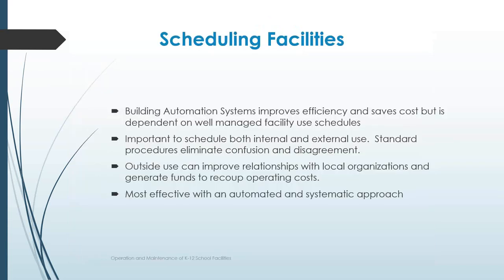Another area is scheduling — really important when managing a facility and sometimes overlooked. Especially when a facility is used by internal and external groups, it's important to have an effective method of scheduling. Most of our school buildings now use some sort of building automation system to improve efficiency and save costs, and it depends on a well-managed facility schedule to make sure that the building automation system is implemented as effectively as possible to adjust things like heat and air. Conflict can arise if two groups think they're both using the gym at the same time and it hasn't been scheduled properly.